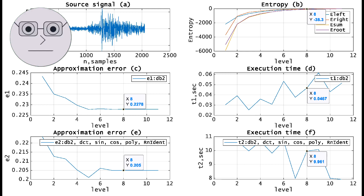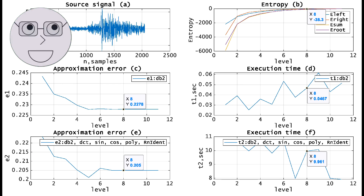The Daubechies Wavelet is a family of wavelets that are widely used in signal processing and image compression. They are named after mathematician Ingrid Daubechies, who developed them in the 1980s. The Daubechies Wavelets have a compact support, which means that they are zero outside a finite interval.